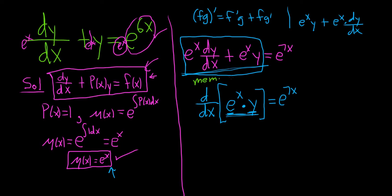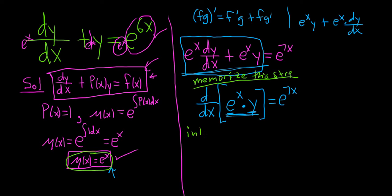Memorize this step — you're supposed to memorize it. It always works out, but you can check your work every single time: write down d/dx of μ(x) times your function, take the derivative, and it will always check. Now what you do is integrate both sides.